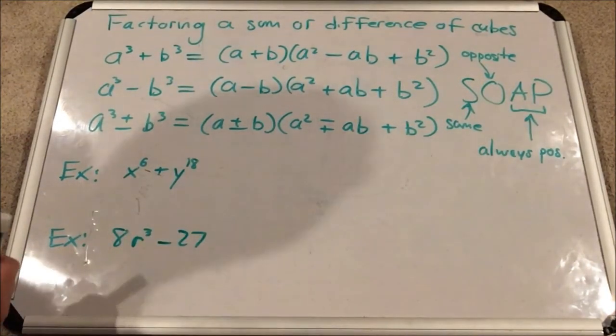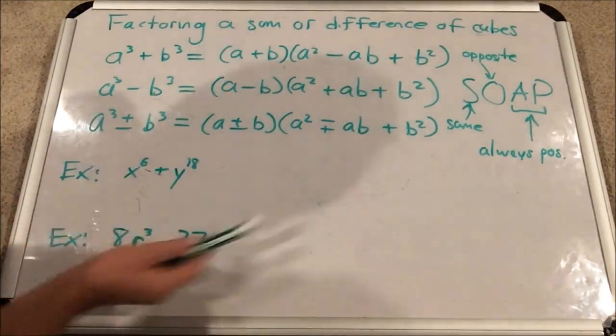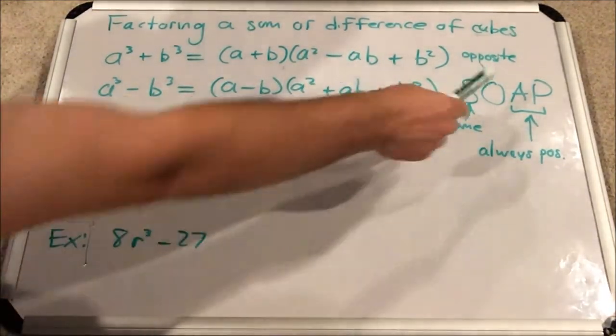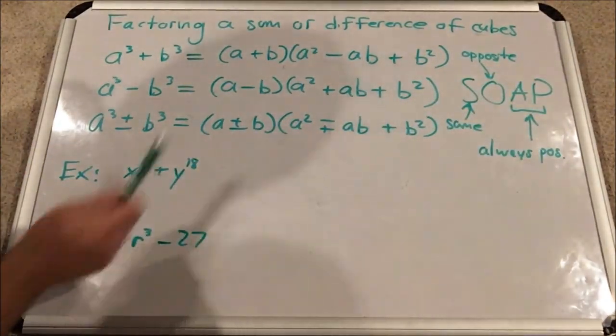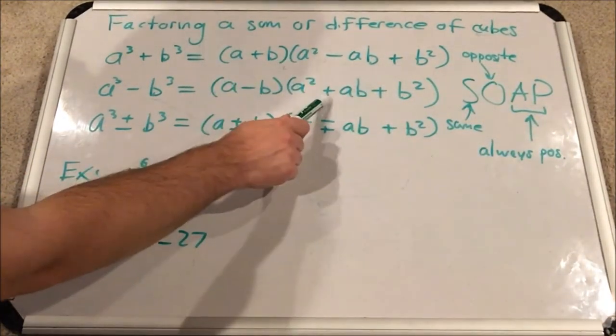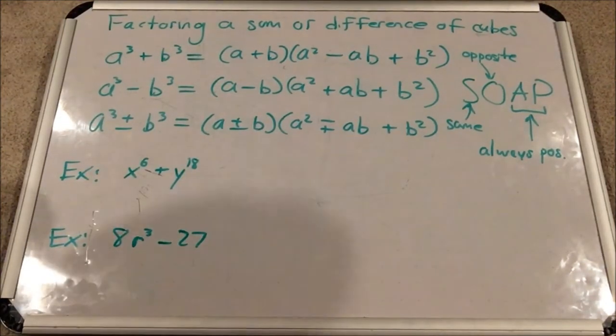So the way to remember these signs, the word SOAP is often used. SOAP stands for S, same, O, opposite, and AP stands for always positive. Same, opposite, always positive. So that's the acronym used to remember the signs.